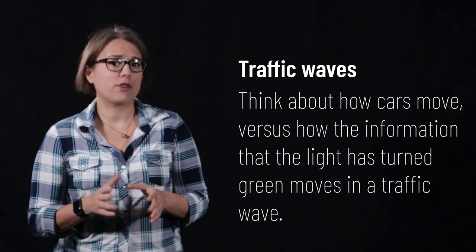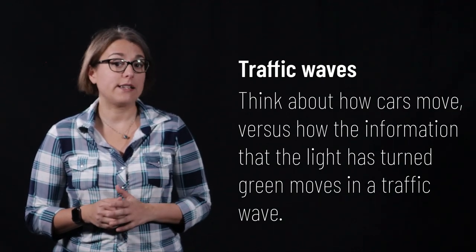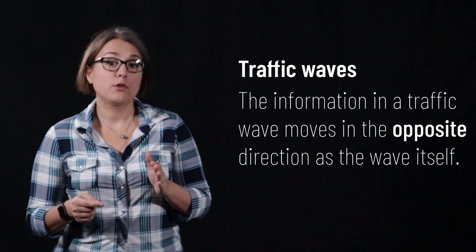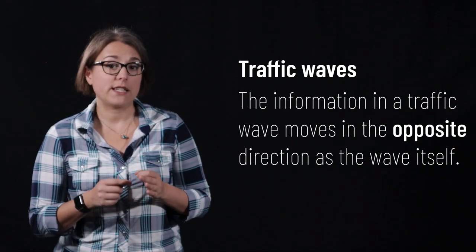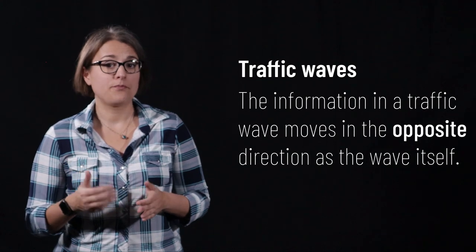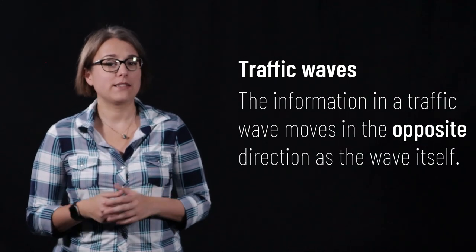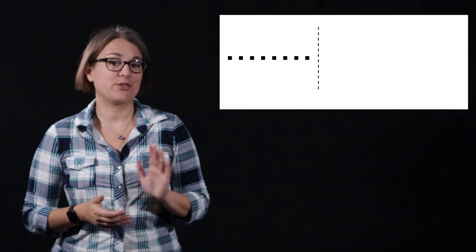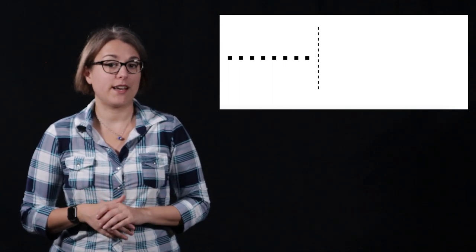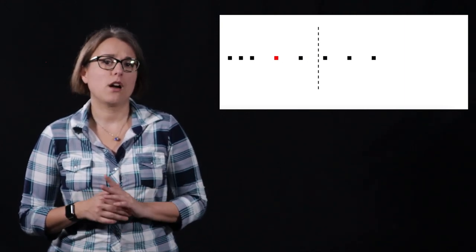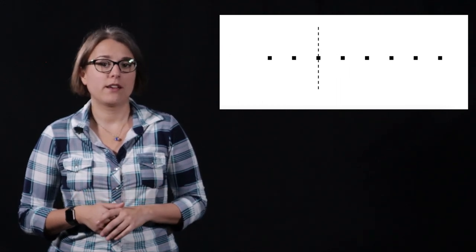It might be strange to think of traffic as a wave, but think about it next time you're at a traffic light. At a red light, cars stop and line up. When the light turns green, the motion of the cars will be forward, but the direction that the information in the wave moves is backward — the first car in line moves forward, then the car behind that one moves, and so on. This animation shows a simulation of cars, each represented as a square stopped at a red light. When the light turns green, each car subsequently starts moving. The position of the red square, representing the information transmitted by the wave, moves backward even though the cars move forward.